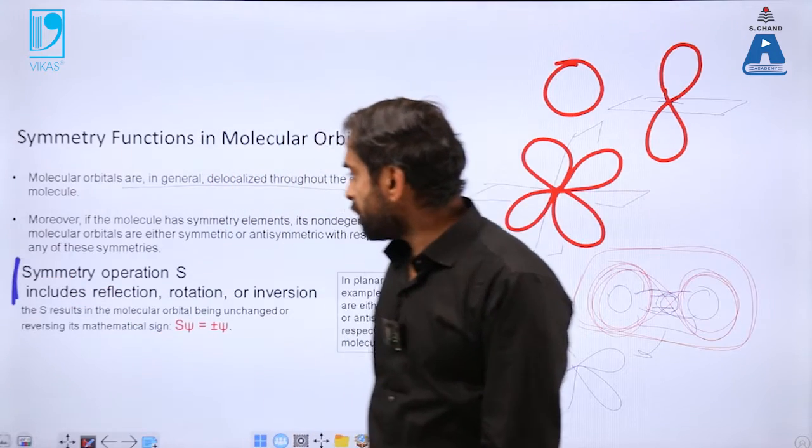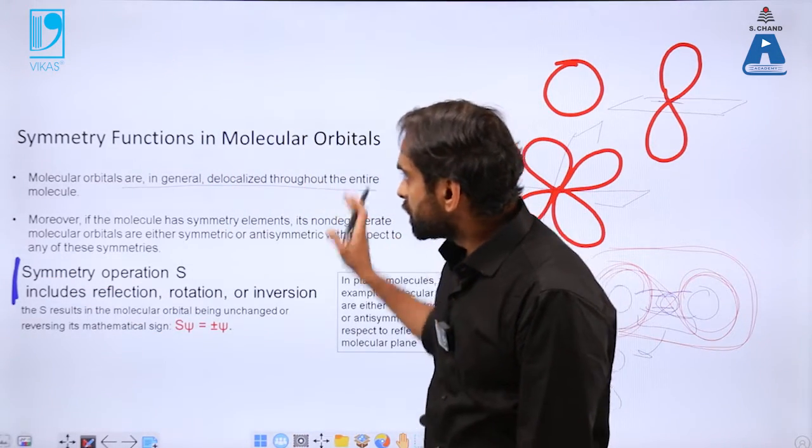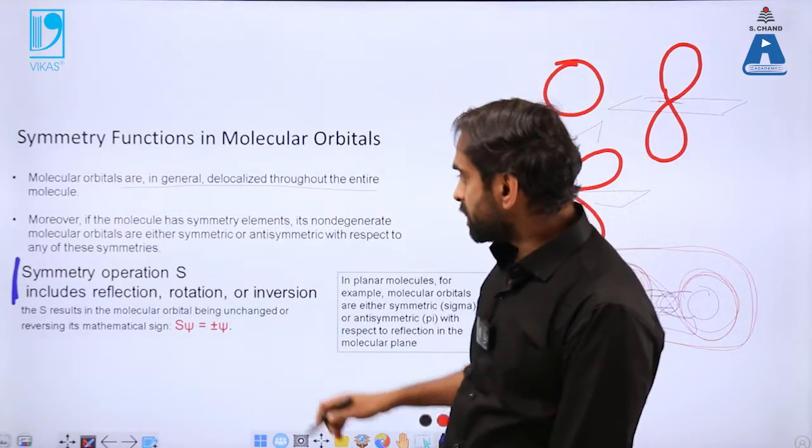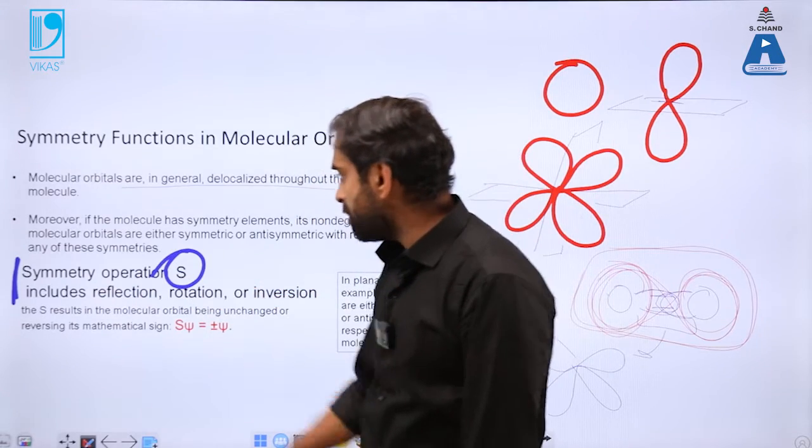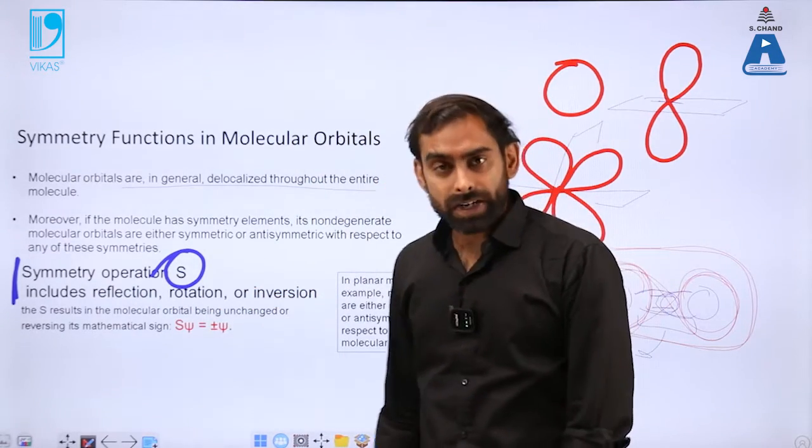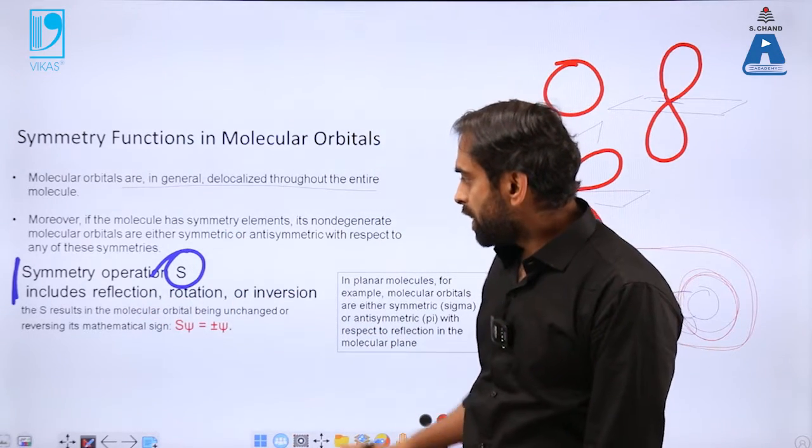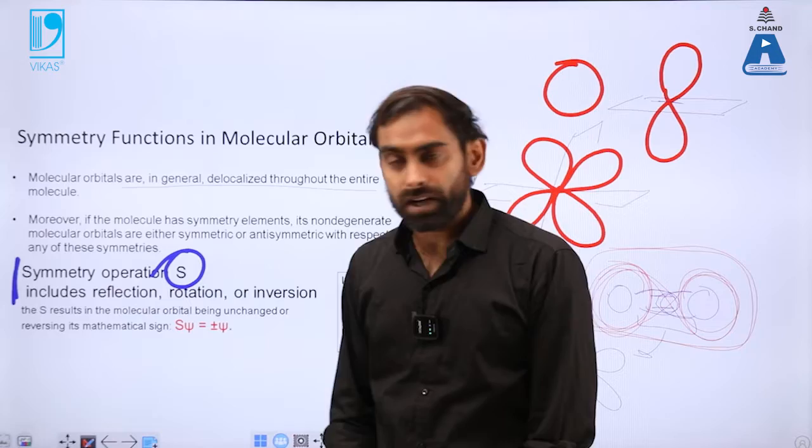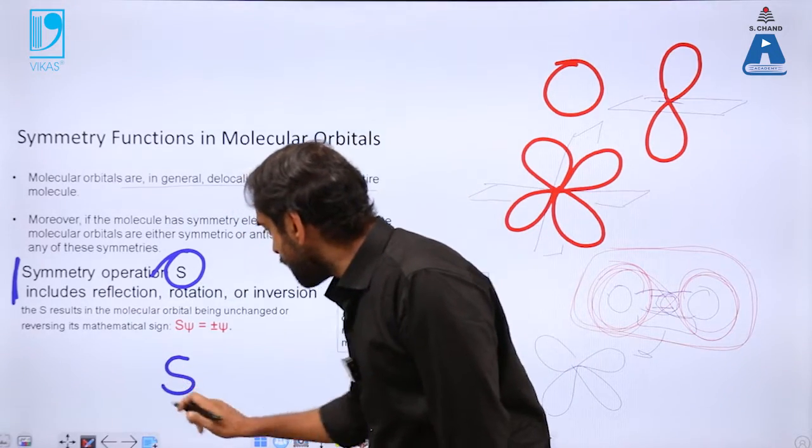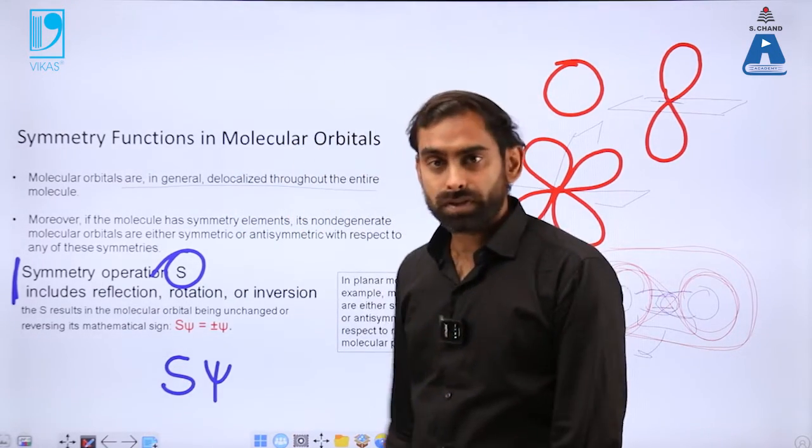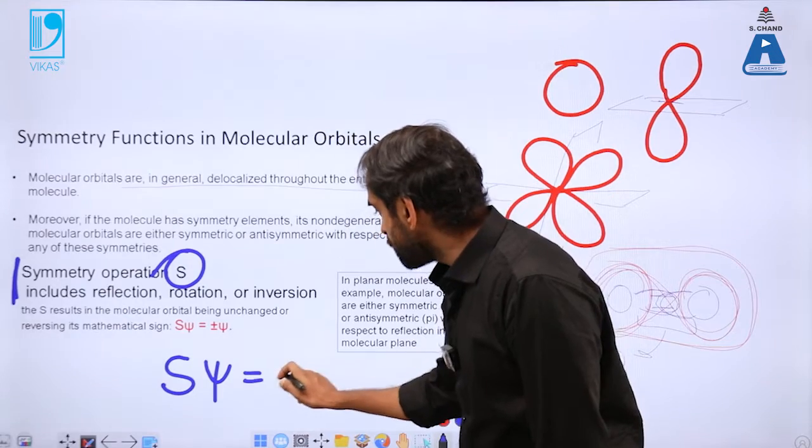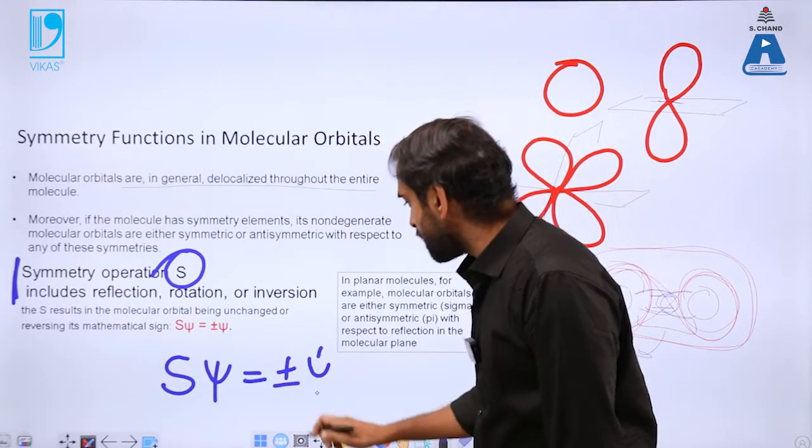Mathematically, if you want to represent the symmetry of molecular orbitals, it can be represented by a mathematical operator S. It includes things like reflection, rotation, and inversion. In terms of the Schrodinger wave function, you can write S as a function of psi, which is the wave function, which equals plus or minus psi.